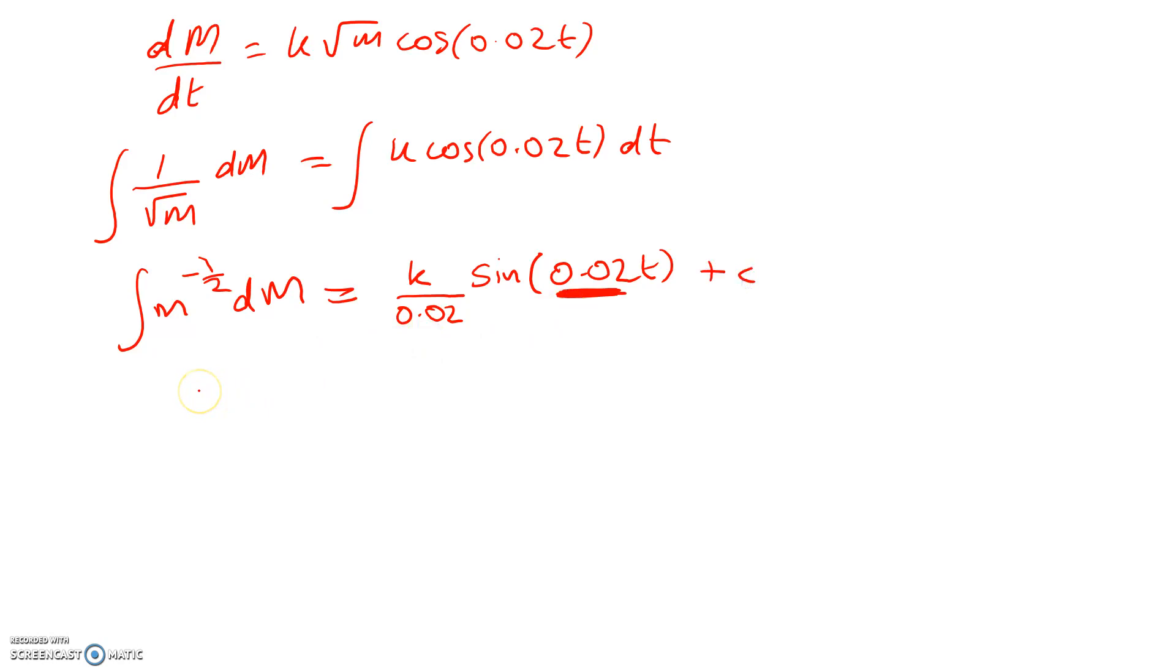So now integrating the left-hand side, we get 2M to the power of a half is equal to 50k sin(0.02t) plus c dash. I'll call it c dash. Remember, we don't need to have a constant of integration on both sides because it all gets washed up in the c dash. So now I'll divide through by 2, and that gives me root M is equal to 25k sin(0.02t) plus c dash. And again, when I divide through the c dash divided by 2, that's still just c dash. We'll call it c dash dash.